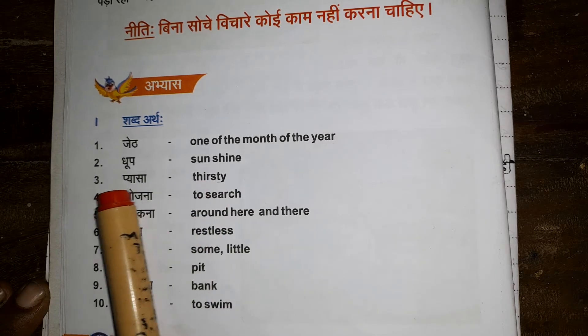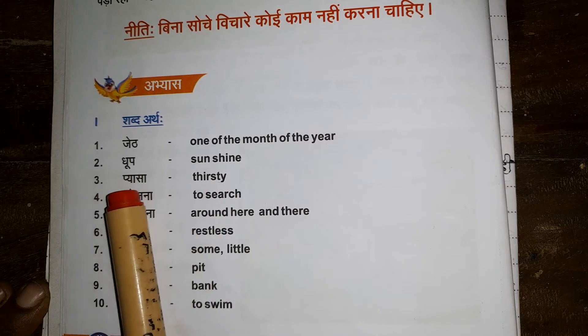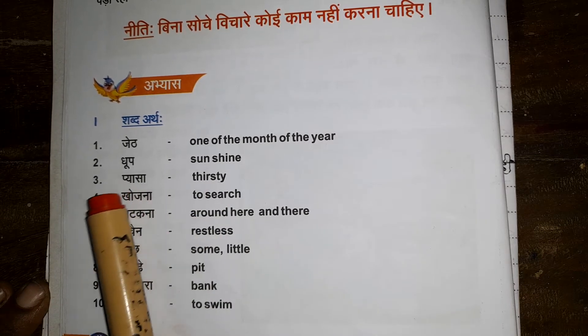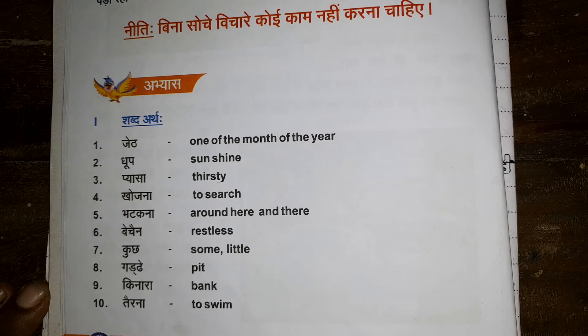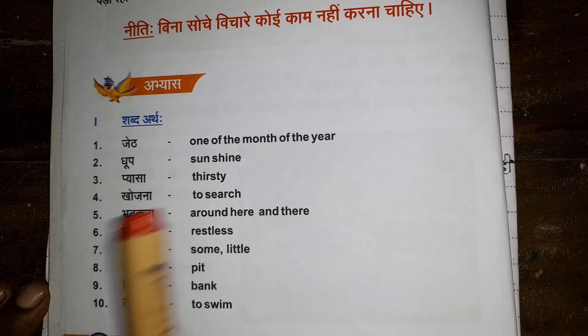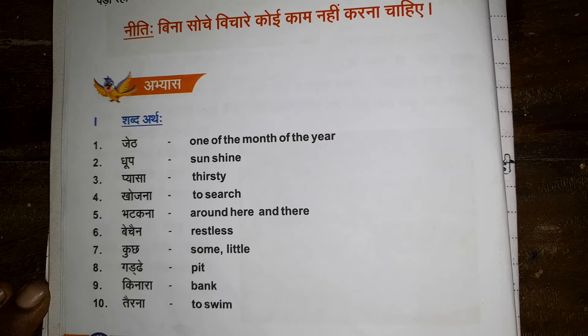Pyaasa. This is a samiktakshar — a combined consonant. The first letter: Pa plus Ya makes Pya. Then Sa: Pyaasa. It means thirsty. Pyaasa means thirsty.